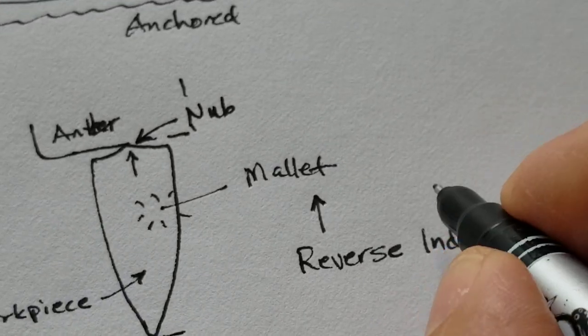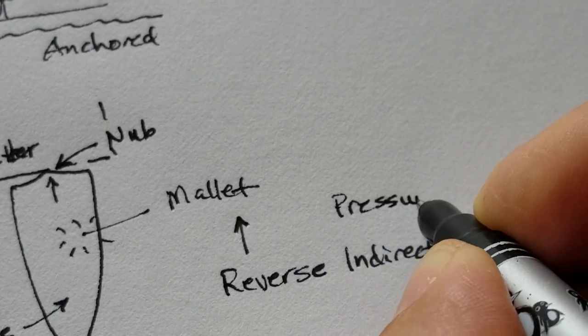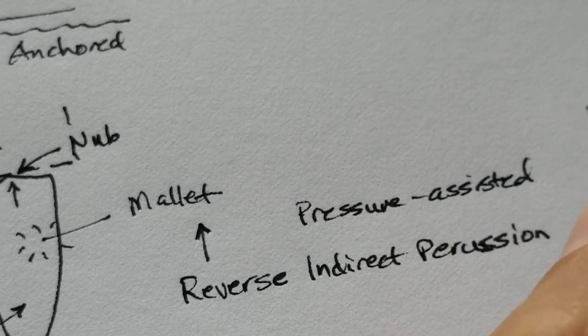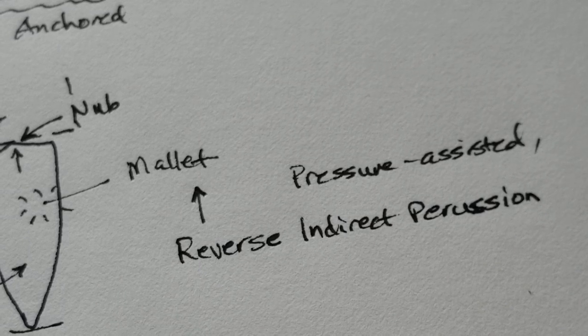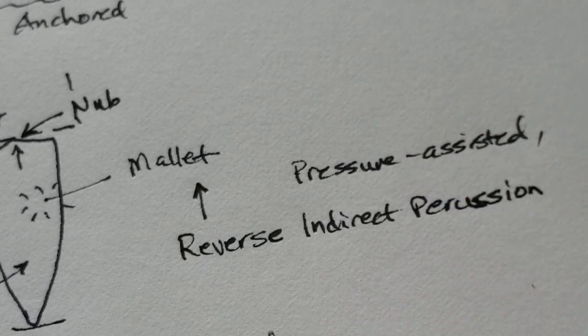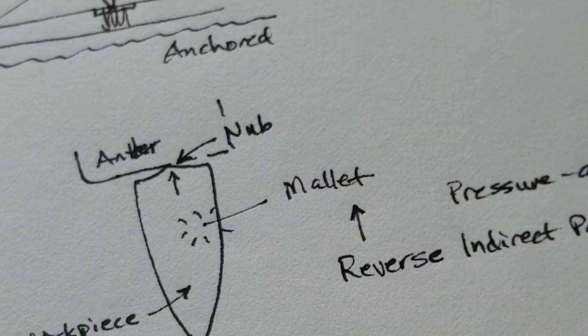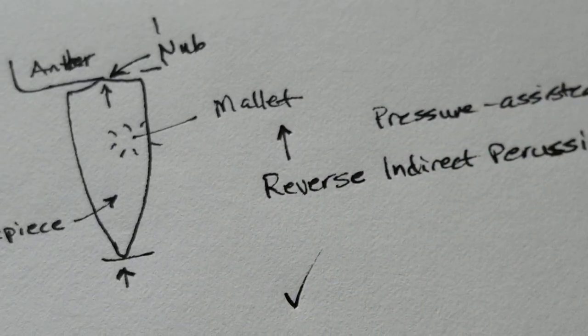Just so we're clear, there's pressure involved. So what is this called? This is called pressure-assisted reverse indirect percussion. Got it? Pressure-assisted reverse indirect percussion. Do I think this is how Cumberlands were made? Yep, I think it's a possibility.